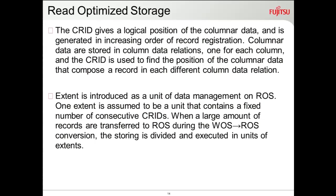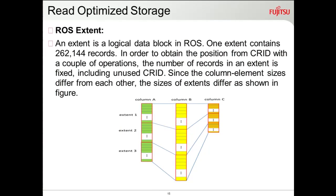The offset may contain a TID pointing to a page and corresponding offset. For fixed-length data, the CRID can be used directly to refer to data by calculating its length and CRID number to reach the page. An extent is a logical data block in ROS containing 262,144 records. Every column can have many extents based on data size — column A might span 10 pages while column B spans 20 pages, but the number of records per extent is fixed.